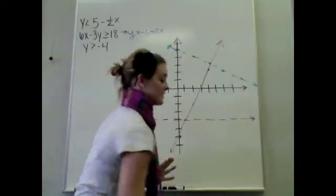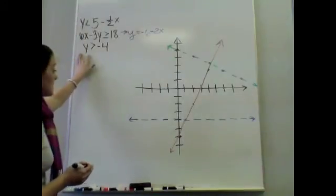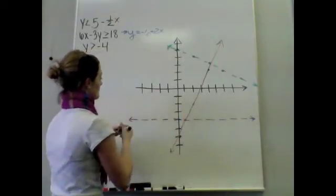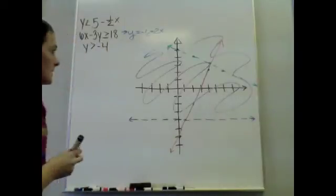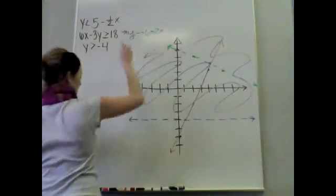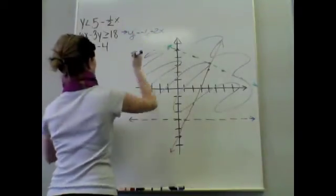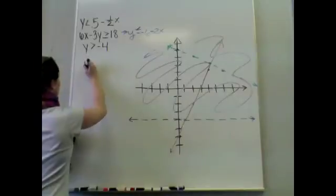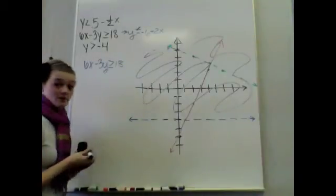If you want to shade for all 3 of these equations, you're more than welcome to, or you can do it in bits and pieces. Starting with the blue line — y is greater than negative 4 — greater than means I shade up, so I'm really going to be shading above my blue line. But now I'm going to do some process of elimination. This next one — it's really y is greater than or equal to... actually, I'm sorry, this should be less than or equal to.